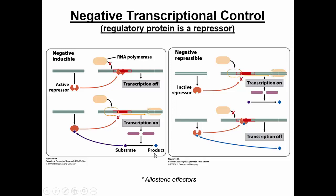For the inducible/repressible question: the left picture goes from off to on, so it's inducible. The right picture has transcription going from on to off, so it's repressible. Sometimes the regulator protein binds, sometimes it doesn't — this conformational change happens because of something called the allosteric site. When a substrate binds to the allosteric site, we call it an allosteric effector. When it's bound, it can change the conformation of the DNA binding domain, either repressing or enhancing binding of the regulator to the operator.